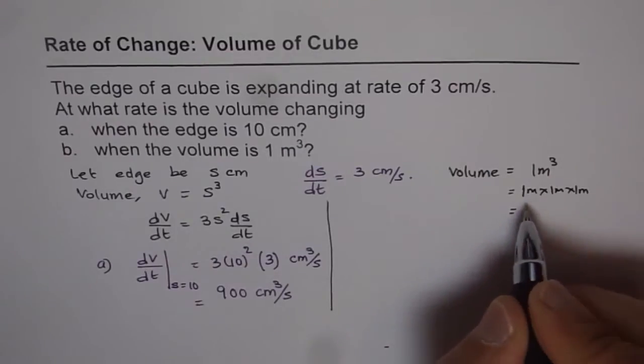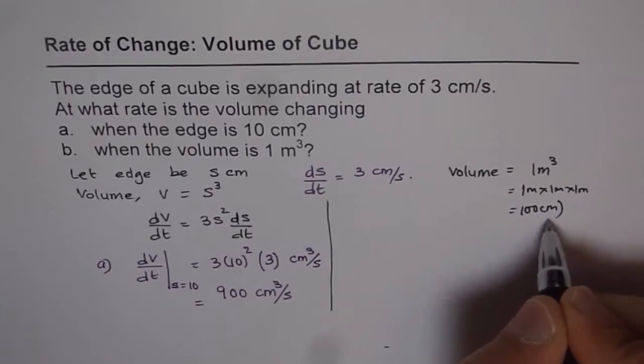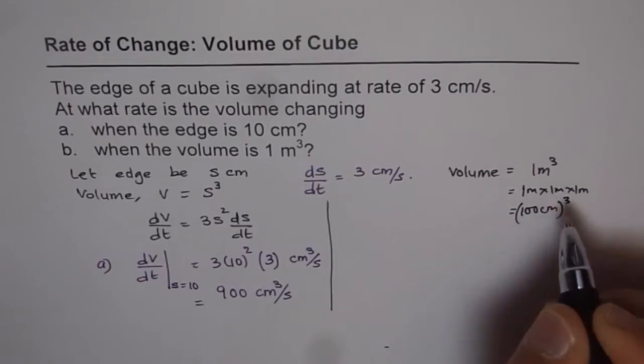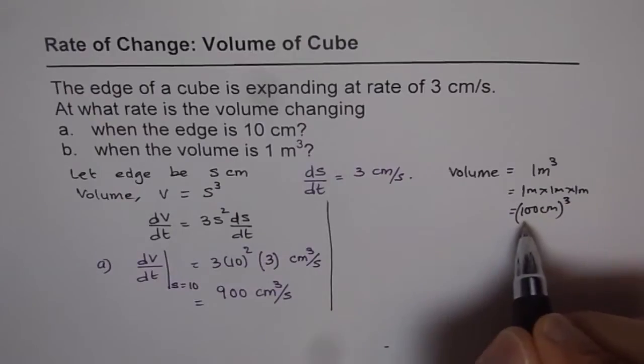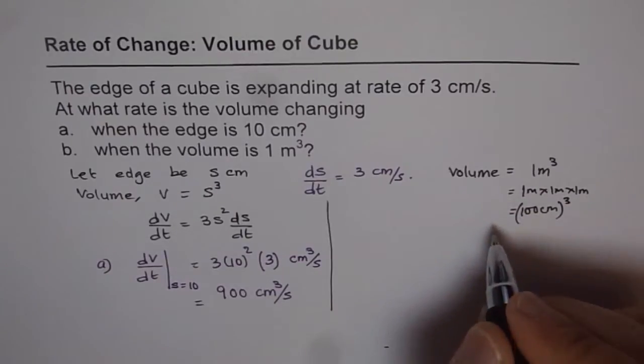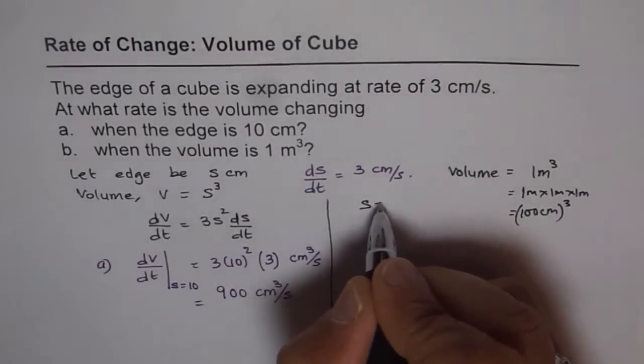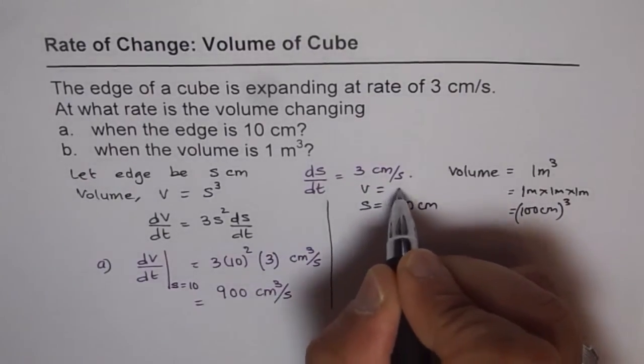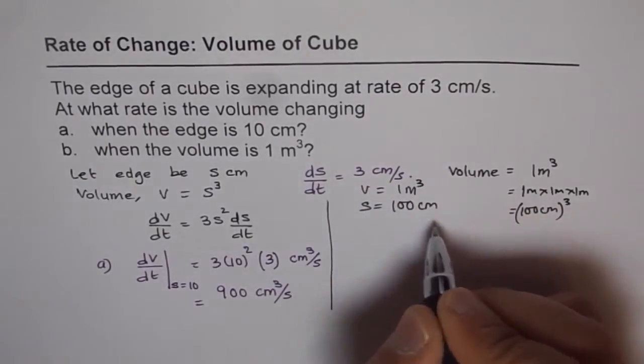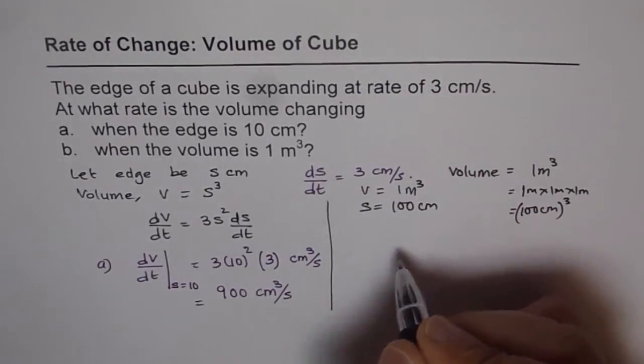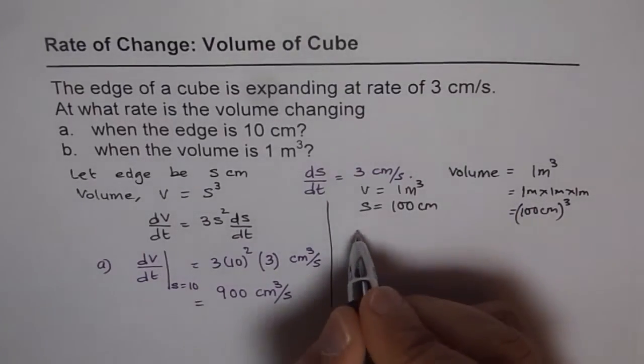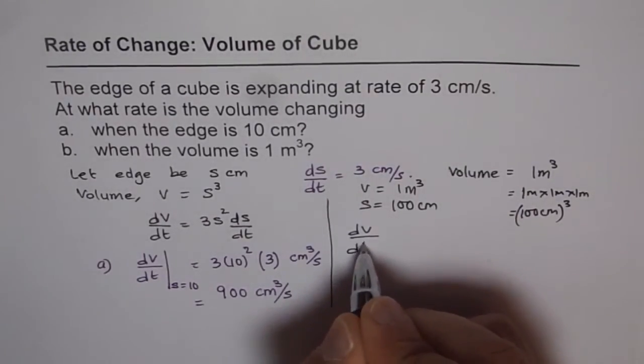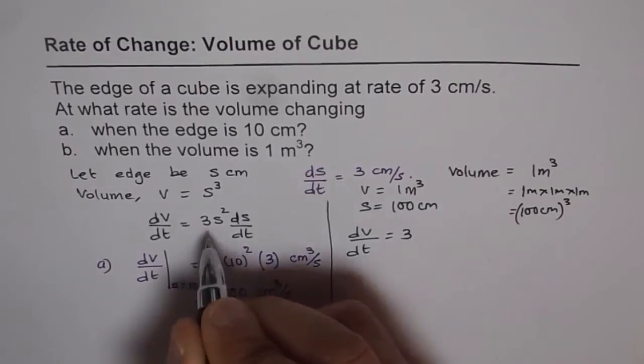And every meter is 100 centimeters. So when we say 1 meter cube, then each edge length is actually 100 centimeters. So at this time we know s equals 100 centimeters when volume equals 1 meter cube. Convert the units properly and then use your formula. So the formula is dv/dt equals 3 times s square. So s for us is 100 this time.